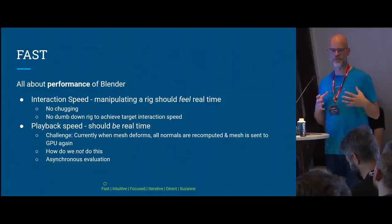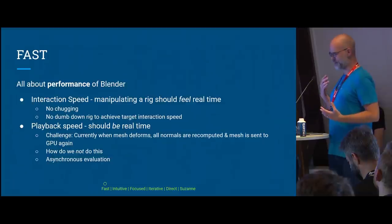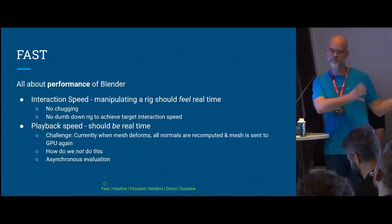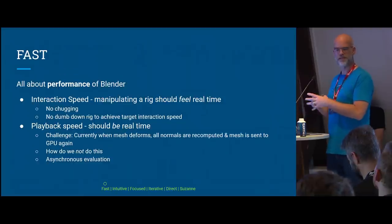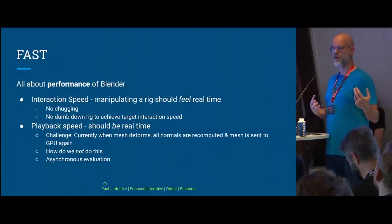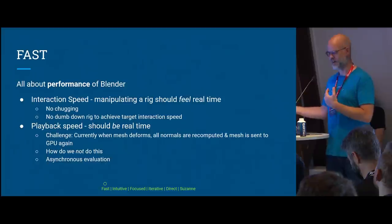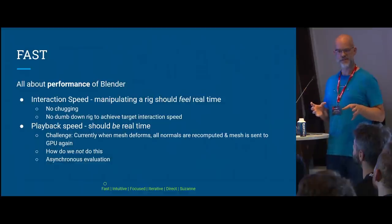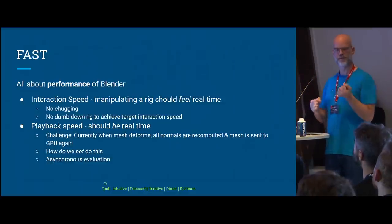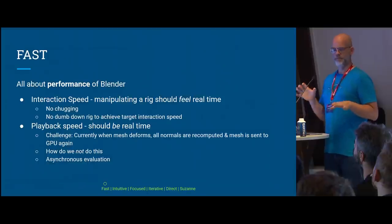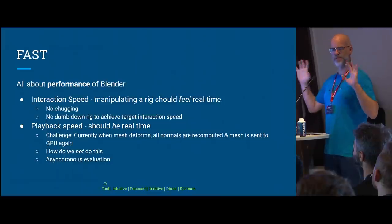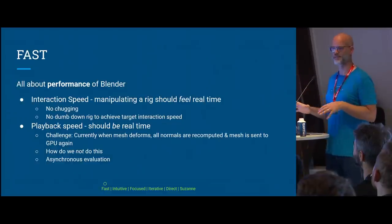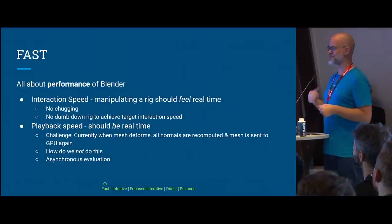Fast is all about the performance of Blender itself. The idea is that when Blender is super fast, you get to try different things — because if you don't have to wait for the software, you can make different decisions and try out various things, which leads to creative freedom. We're looking at two different speeds: interaction speed when you're posing your rig — that has to feel real time, roughly 12 frames per second from usability studies. There shouldn't be any chugging or the need for a dumbed-down rig.